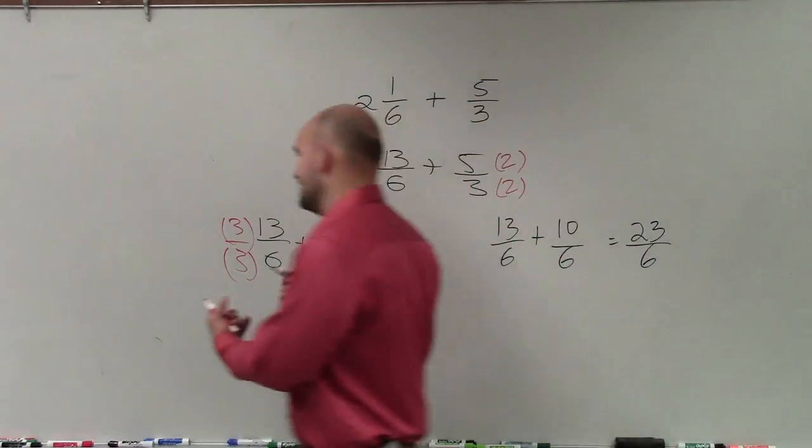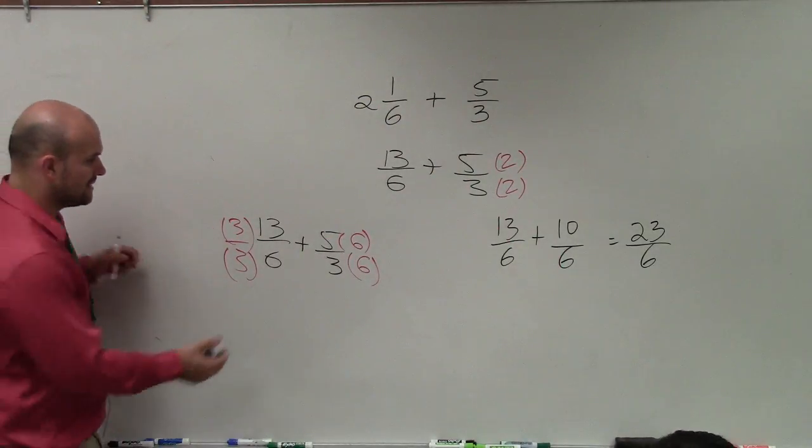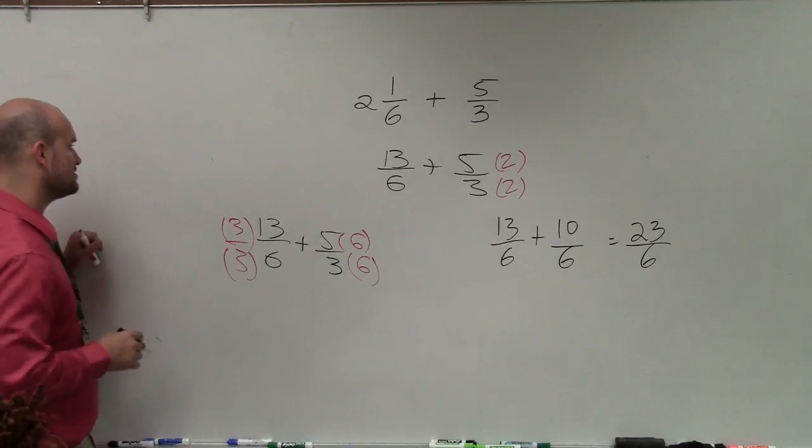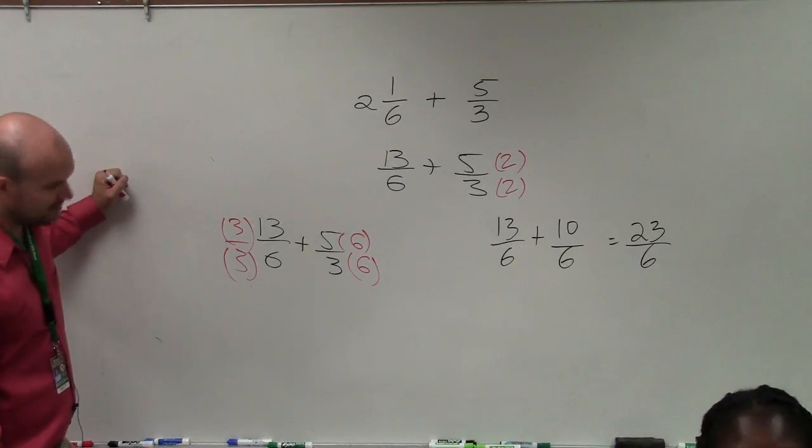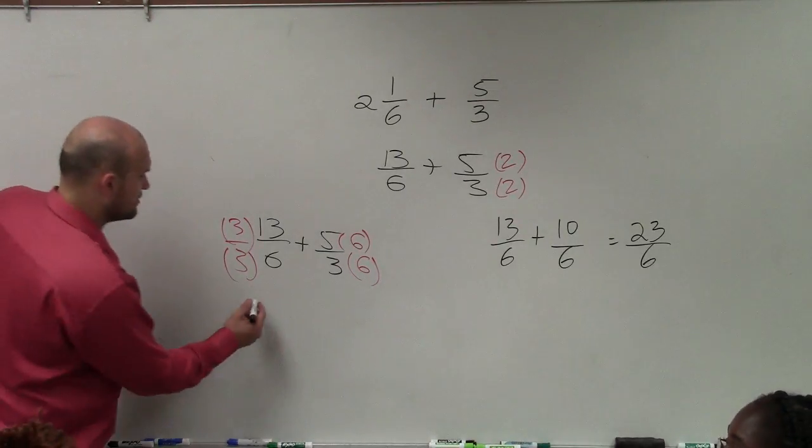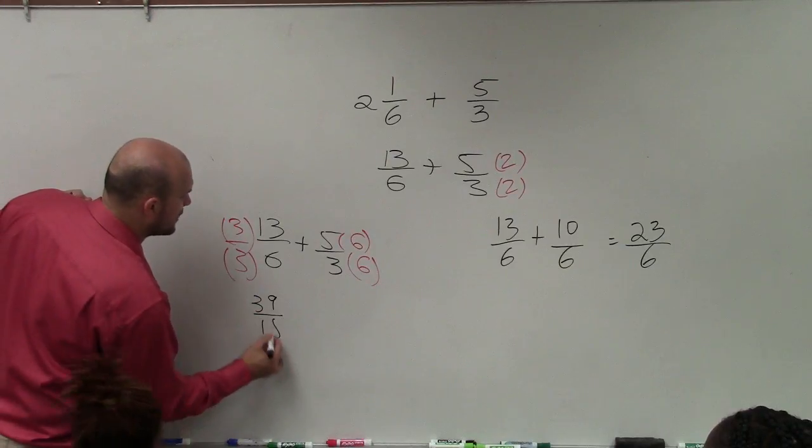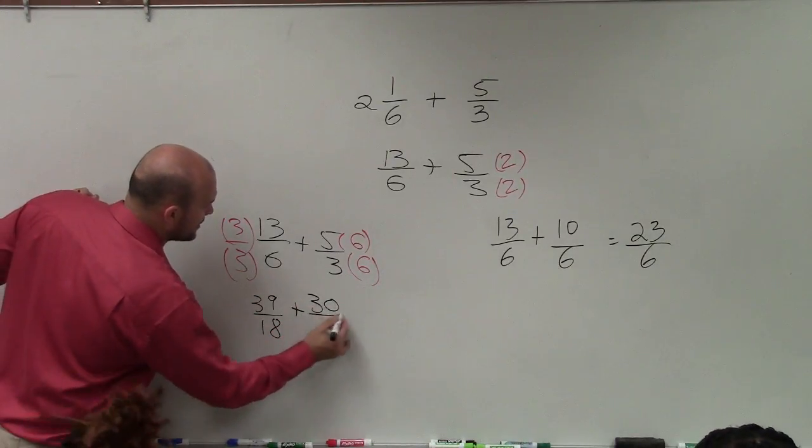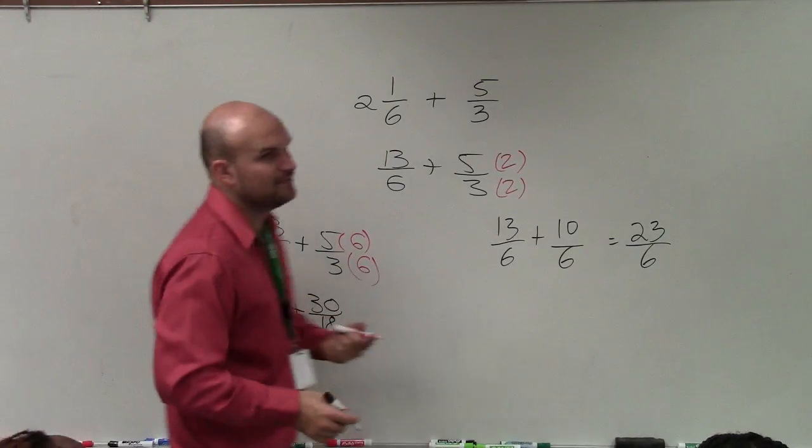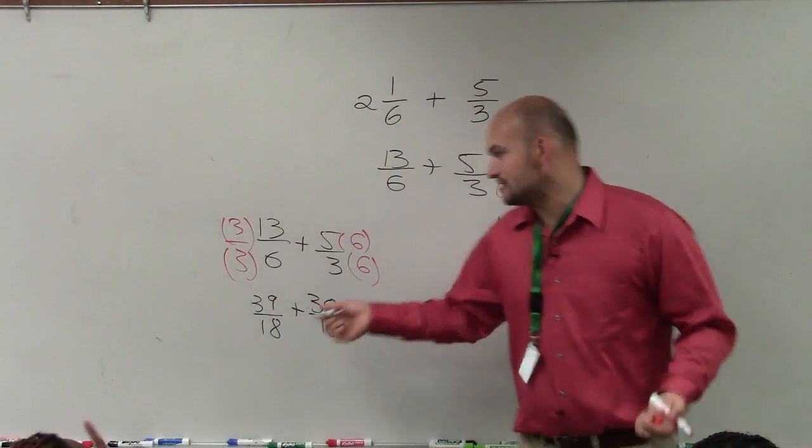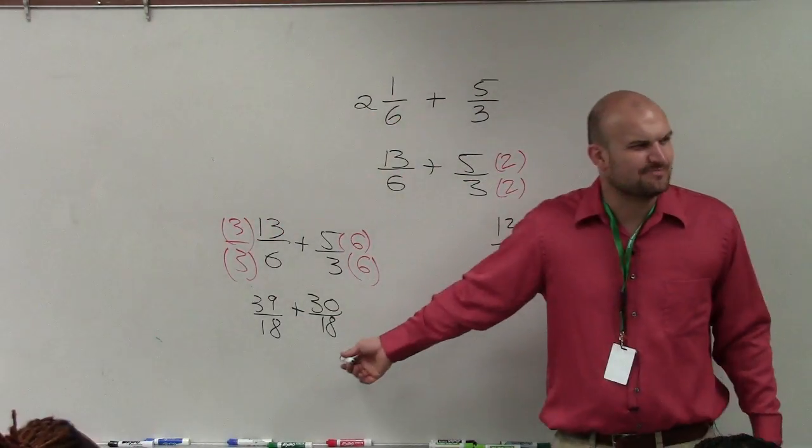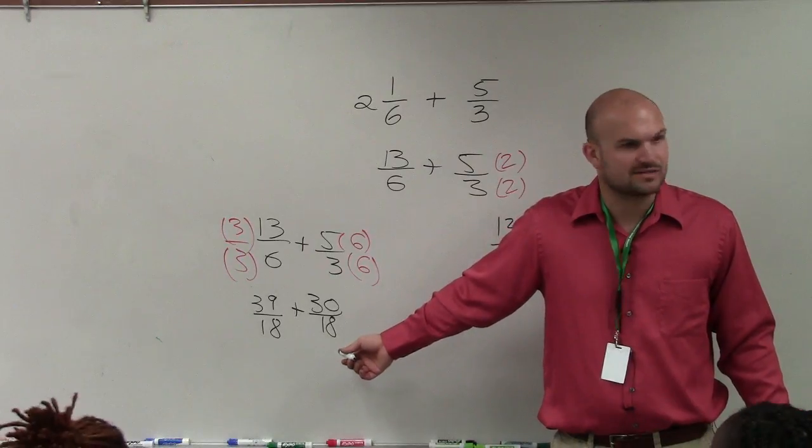Where in this case, you guys can see, now what you're doing is, so you have 13 times 3 is 39 over 18 plus 30 over 18. So if you guys were to add these up and then simplify, you'd still get the exact same answer. But you guys can see it's just bigger numbers and more opportunities to make mistakes, right?